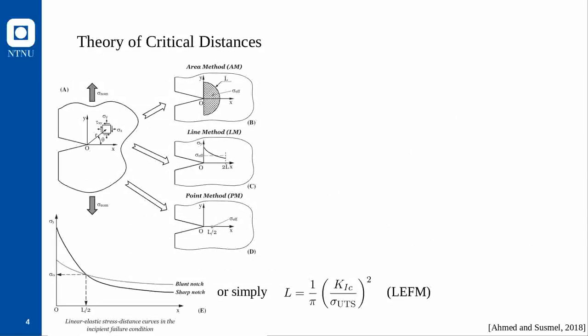The data was post-processed using the theory of critical distances, summarized in the picture on the left given by Ahmed and Susmel. Instead of using the difficult-to-obtain notch root stress to assess failure, the TCD suggests using the maximum principal stress either at a point at distance L/2 from the notch root — the point method — or the average over a line in the notch bisector — the line method — or the average over an area. All of these methods are characterized by the material length scale L, which is directly related to the structural support phenomenon.